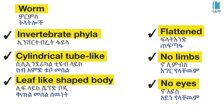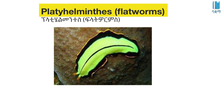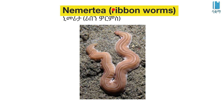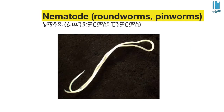Worms are another group of invertebrates. They can be cylindrical and tube-like, flattened, or leaf-like in shape. Worm phyla include Platyhelminthes — flatworms — phylum Annelida — segmented worms — phylum Nemertea — ribbon worms — and phyla containing roundworms and pinworms.